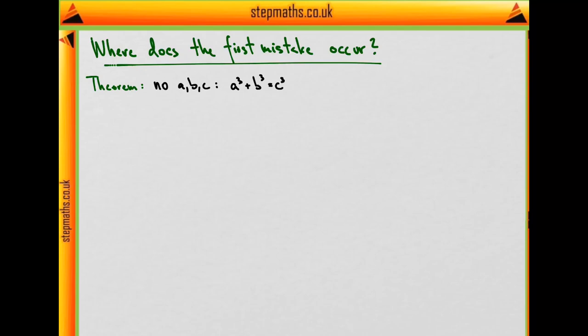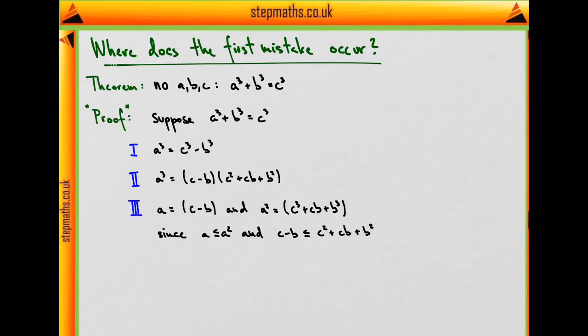But the student who attempted to prove this special case chose to prove this theorem by contradiction. So they said, suppose that there are, in fact, such numbers a, b, and c, that their cubes add up. Then we can subtract b cubed from both sides. We can break up this expression into a product of two brackets. And since this is a cubed, we can associate the smaller number with a and the bigger number with a squared. Well, then a squared must be c minus b squared.